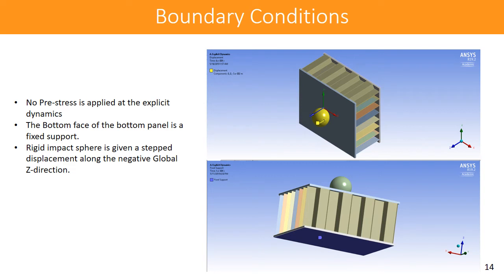The boundary conditions applied — since the analysis is conducted in Explicit Dynamics — are: the bottom face of the structure is fixed as a fixed support, and a stepped displacement is applied to the rigid impact sphere in the negative direction of the global Z-axis.